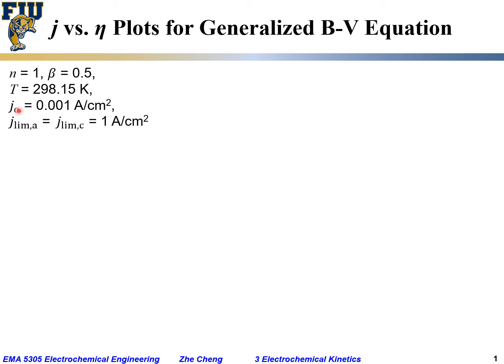j0, exchange current density, let's assume it to be 0.001 amp per square centimeter, not a very big number. And the limiting current density for both the anodic and the cathodic process for the same electrode or half-cell reaction is 1 amp per square centimeter. So we specify the parameters.